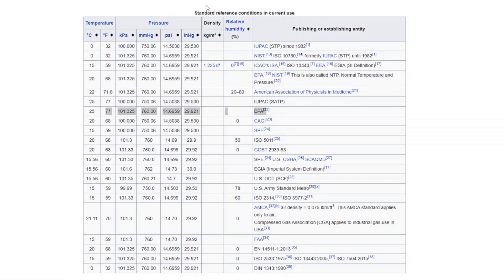Here is a list of the different conditions that have been defined. Now where I am from, we typically work with the EPA definition which is 25 degrees Celsius and 101.325 kilopascal and we call that normal conditions.